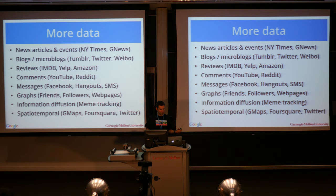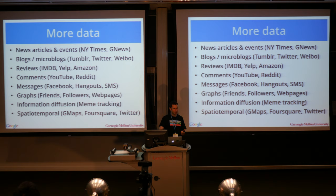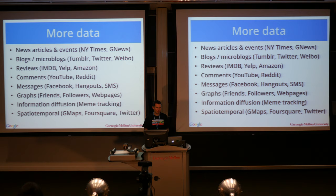So there's a lot of stuff on YouTube, Reddit — their messages. Those are probably the hardest to obtain because these are actually personal communications between people, and usually people get really upset if everybody in the world can read their emails. Graphs: some of them are actually crawlable. The Stanford SNAP website is actually a really good place where you can find a lot of them. Then you have information diffusion networks and spatial-temporal information — where people check in at what time, like Foursquare, Twitter, Facebook. These are all data sources that you can use.